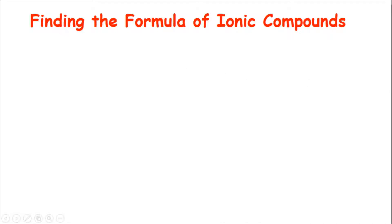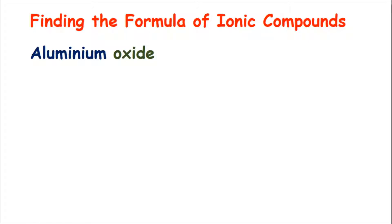Welcome to this video about how to find the formula of ionic compounds. The first example we are going to look at is aluminium oxide. To find the formula of ionic compounds you need to know which ions make up the compound and which charge they have. Aluminium oxide is made from aluminium 3+ and O2-.